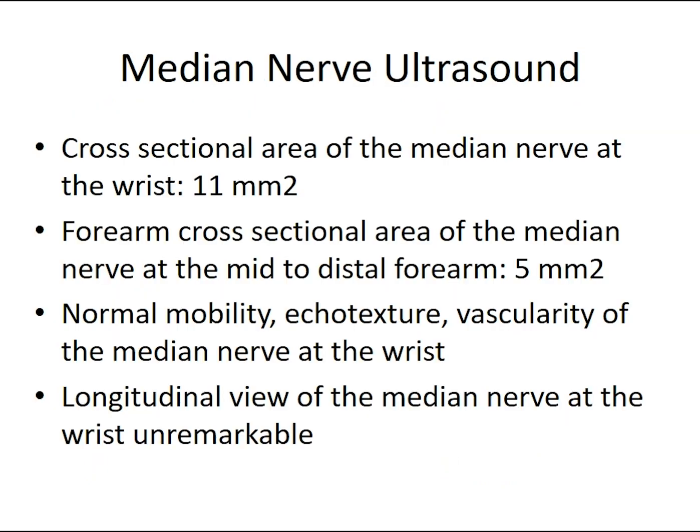At the wrist, the cross-sectional area of the median nerve was 11 square millimeters, which is actually normal in our lab — anything under 12 square millimeters. At the forearm, the cross-sectional area was 5 square millimeters. There was normal mobility of the nerve when she made a fist, the echotexture looked okay, and there was no increased vascularity on Doppler at the wrist. In long axis the nerve was normal, with no evidence of a notch sign or any other compression.